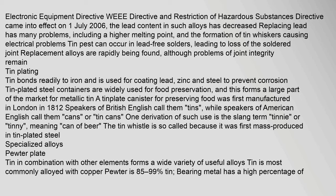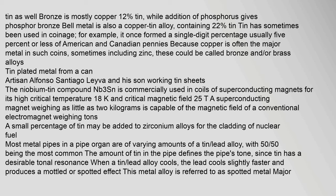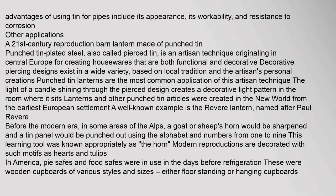Tin in combination with other elements forms a wide variety of useful alloys. Pewter is 85–99% tin; bearing metal has a high percentage of tin as well. Bronze is mostly copper with 12% tin, while addition of phosphorus gives phosphor bronze. Bell metal is also a copper-tin alloy containing 22% tin. Tin has sometimes been used in coinage, usually at 5% or less of American and Canadian pennies. The niobium-tin compound Nb3Sn is commercially used in coils of superconducting magnets for its high critical temperature.